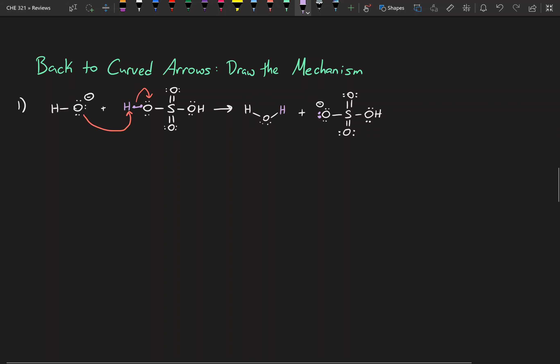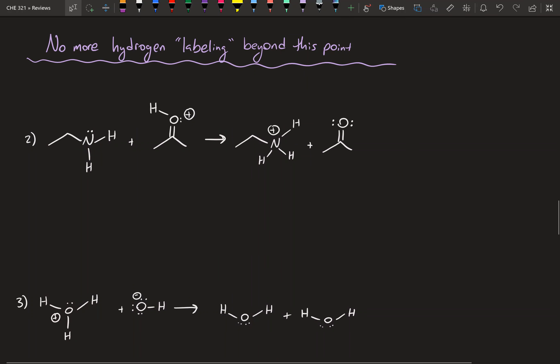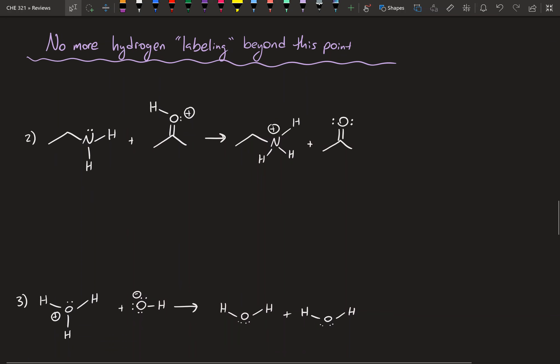The two electrons in this bond — I'll label them red — are now going to be part of this new bond. That was just a quick refresher on something very similar to what we did last time. Beyond this point I'm not going to label the hydrogens or color code anything, because you won't be seeing that on tests.